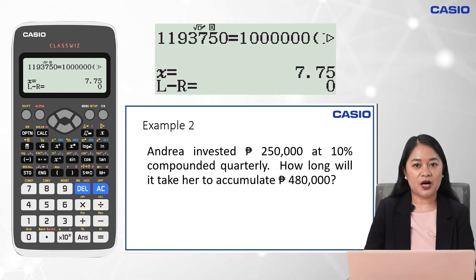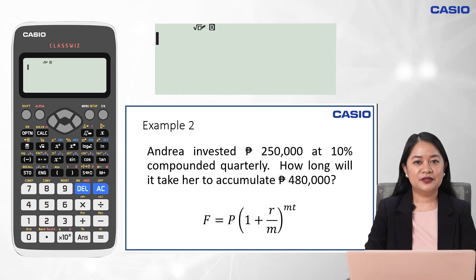So for this problem, the principal or the present value is 250,000, the future value is 480,000, the annual interest rate is 10%, and the number of conversion period is 4 since it is quarterly. So the unknown in this problem is the period of time. Again, we will represent the unknown by x using Casio Classwiz.